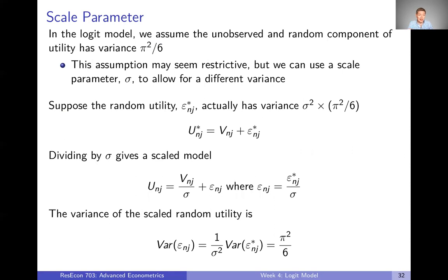Another aspect is the scale parameter. In the Logit Model, we assume that the unobserved random component of utility has a variance of pi squared over six — a seemingly obscure number, but there's a reason for it. This assumption may seem overly restrictive, since we're imposing the variance of the utility in that unobserved random term, but it turns out we can use a scale parameter sigma to allow for different variances.